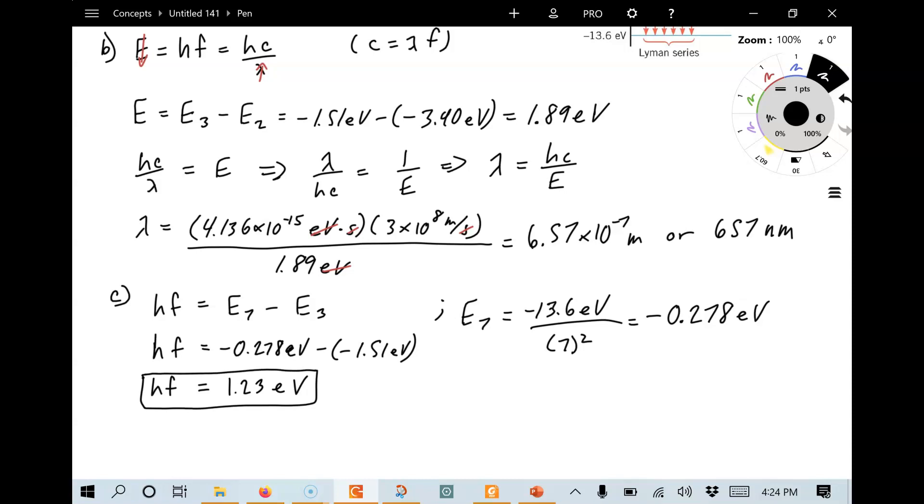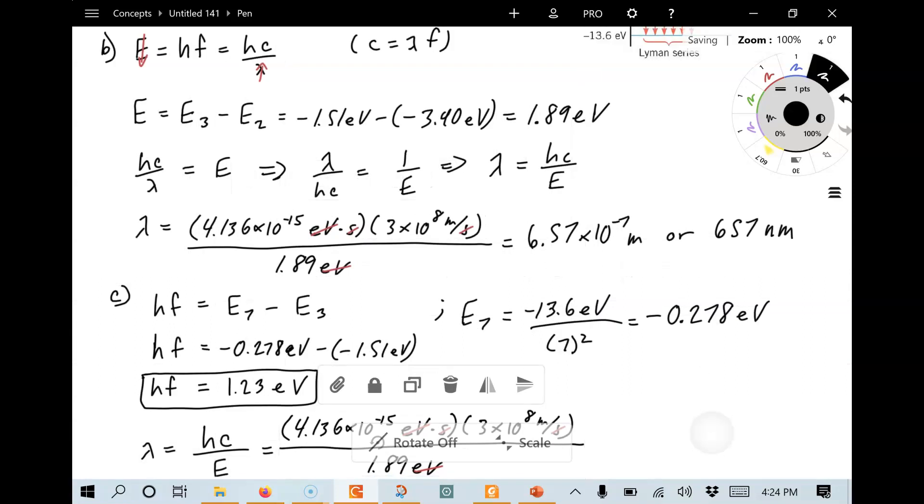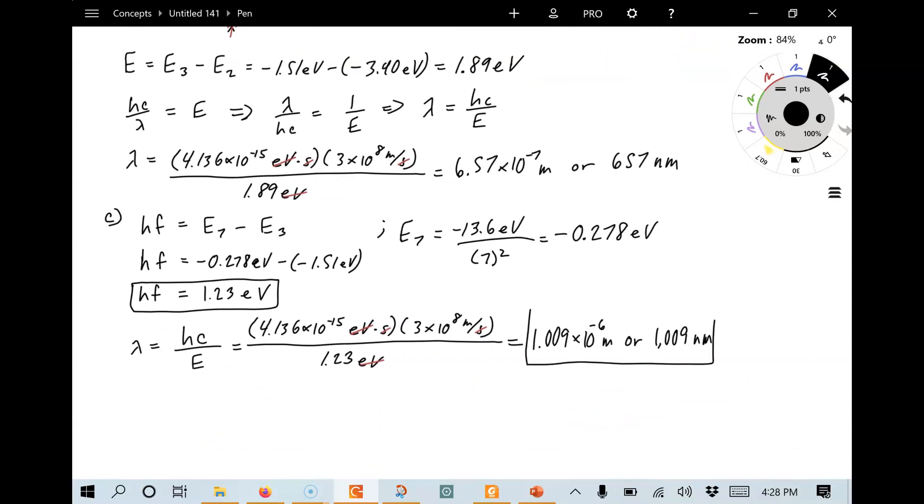And to figure out the wavelength, we do the same thing as before. We can use the formula that we had right up here again. So in this case, lambda is equal to hc over the energy. And hc, well, that's the same old thing we had before here. Let's go ahead and just copy that. And the only difference here is we need to use the energy for this problem, which is 1.23 eV. And when we put that into our calculator, we get a value equal to 1.009 times 10 to the minus 6 meters, or 1.009 nanometers. So that's the wavelength for this problem, this part.